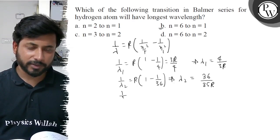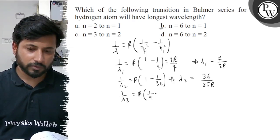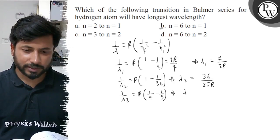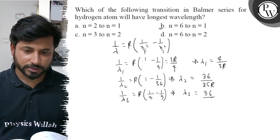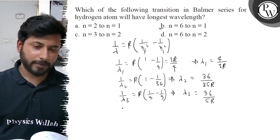Similarly, for Option C (n = 3 to 2): 1/λ₃ = R × (1/4 − 1/9). Therefore λ₃ = 36/(5R).